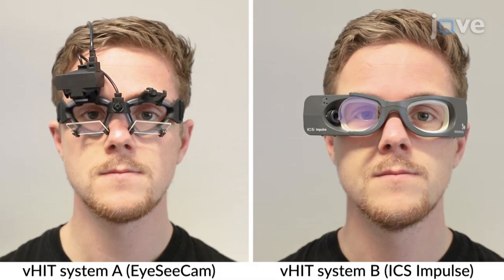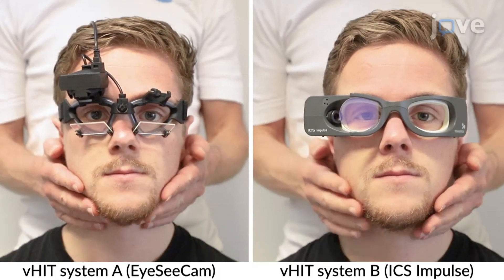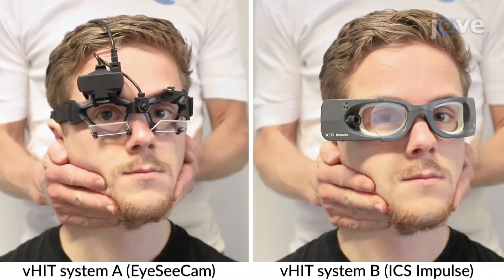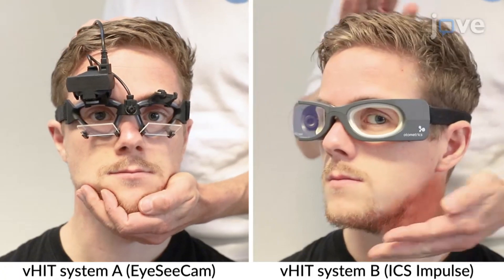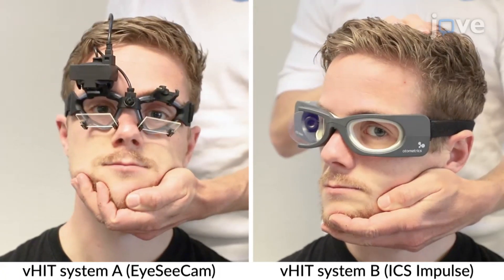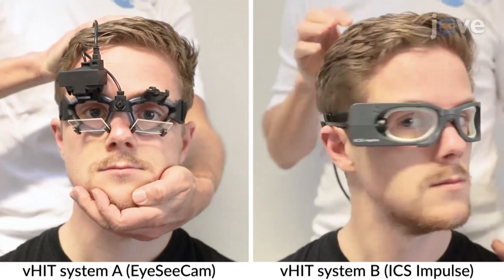VHIT systems used for demonstration in this video include the IC CAM system, which will be referred to as VHIT system A, and the ICS impulse system, which will be referred to as VHIT system B throughout this video.